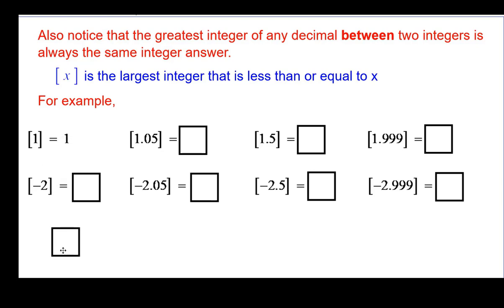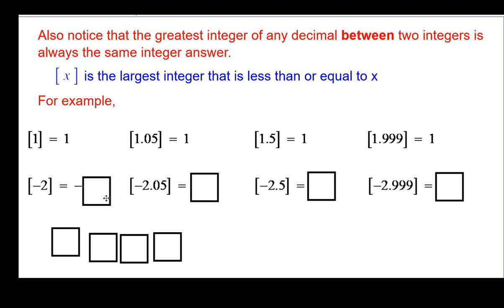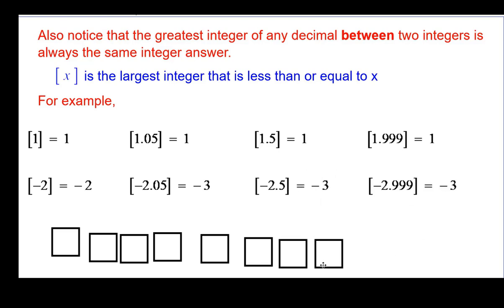So let's look at the greatest integer of 1. We pretty much know that's 1. 1.05, also 1. 1.5, 1. 1.999, 1. That's pretty straightforward. All the ones between 1 and 2, not including 1 and 2 necessarily, have the same answer. These three will have the same answer as well, because they're all between negative 2 and negative 3. Now the greatest integer of negative 2, of course, is itself. But be careful on this one. And it is negative 3. And if that's negative 3, these better be also, because they have the same value in between integers. Press pause as needed to think about that.